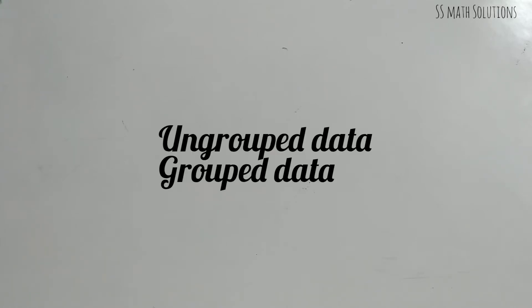In this section we are dealing only with mean deviation. Mean deviation itself has three types: mean deviation for ungrouped data, and mean deviation for grouped data — which includes discrete frequency distribution and continuous class interval frequency distribution. So there are three cases in total that we need to study.